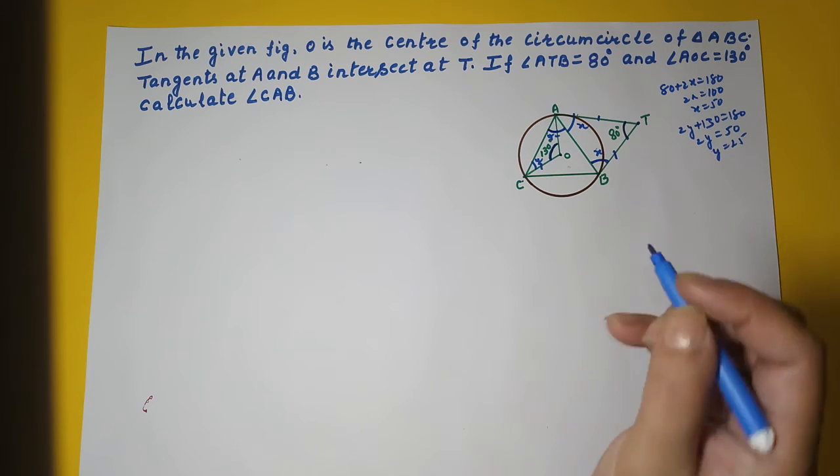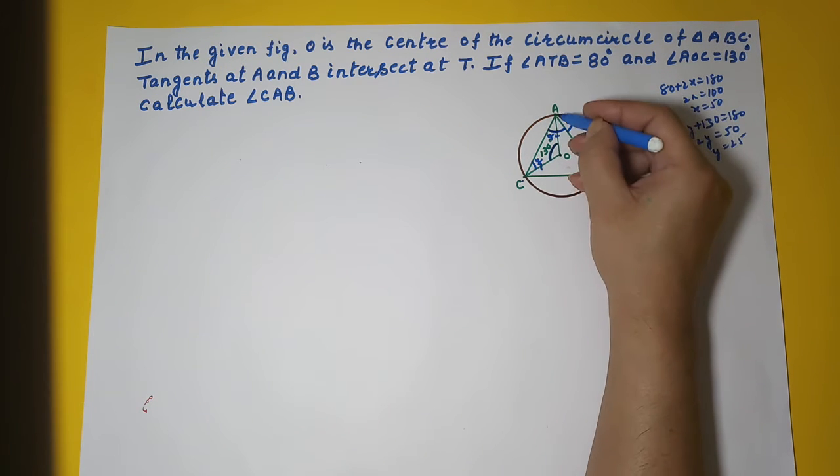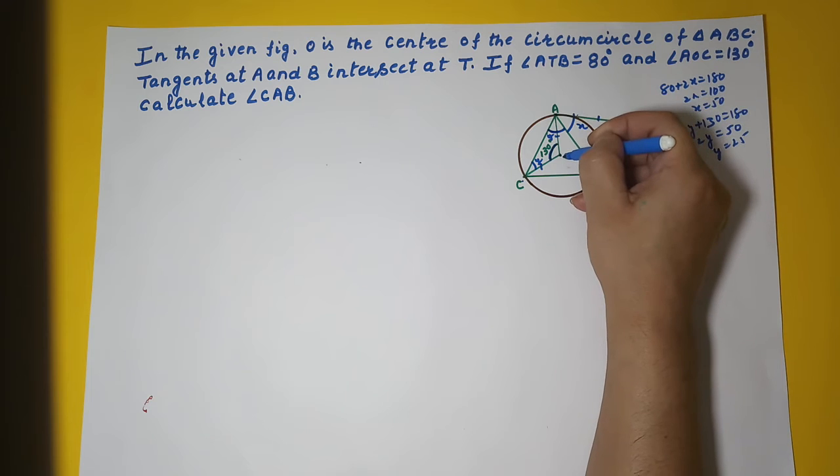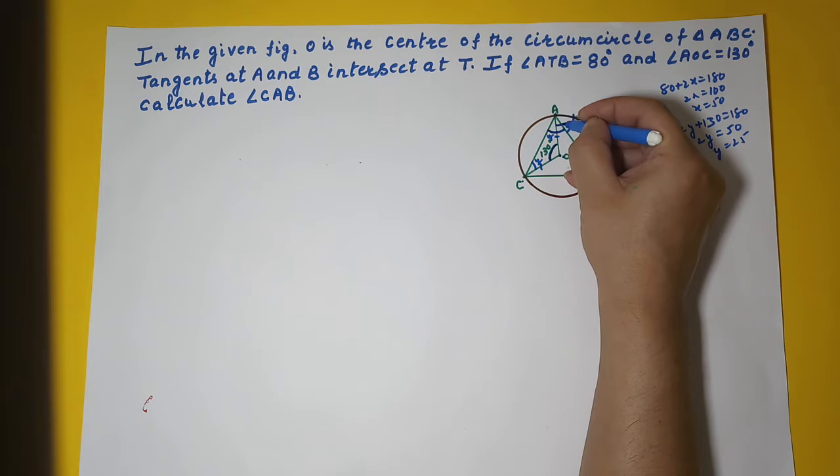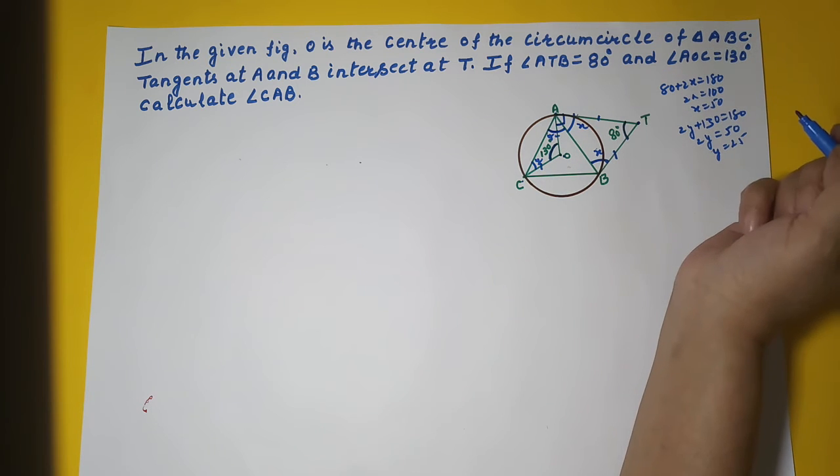Now you also know that A is the point of contact and O is the center. The line joining the point of contact and the center is 90 degrees. So this angle is 90 degrees.